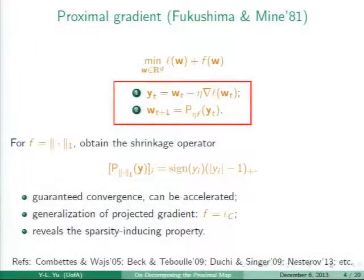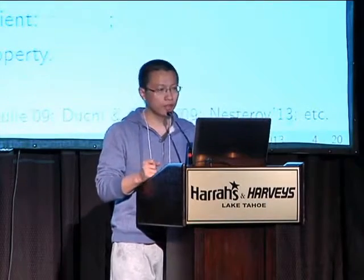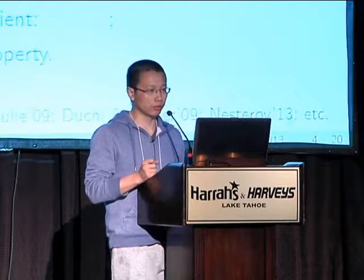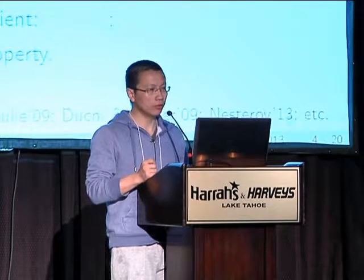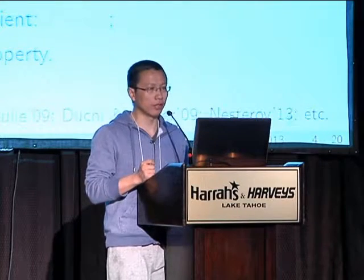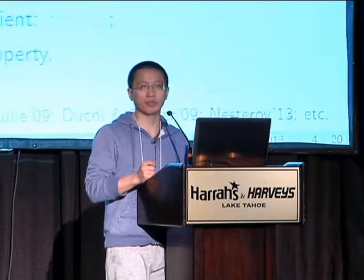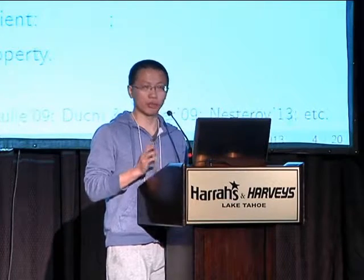Based on the proximal map, there is a family of algorithms known as proximal gradient, also called ISTA or forward-backward splitting. It consists of two steps: first, take a gradient step with respect to the loss function L only; second, take the proximal map with respect to the regularizer F. If we take the L1 norm for sparsity, you get the shrinkage operator. This algorithm has guaranteed convergence, its rate depends on how nice the loss function is, and it's a natural generalization of the projected gradient algorithm where F is just an indicator of a convex set.